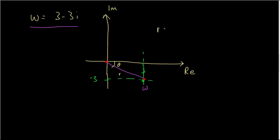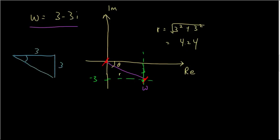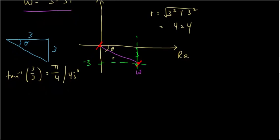The distance r equals the square root of 3 squared plus 3 squared, which equals approximately 4.24. Now for the angle — looking at the simple right triangle, where the horizontal side is 3 and the vertical side is 3, theta equals arctan(3/3), which gives pi over 4 or 45 degrees.